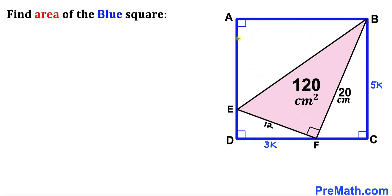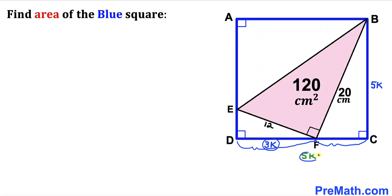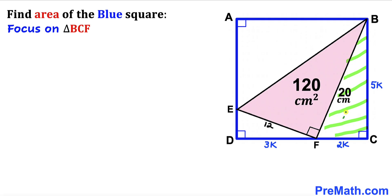Since we are dealing with square ABCD, all side lengths are equal. If BC equals 5K, then side CD is also 5K. Since DF equals 3K, segment FC equals 5K minus 3K, which is 2K. Focusing on right triangle BCF, its side lengths are 5K, 2K, and hypotenuse 20.